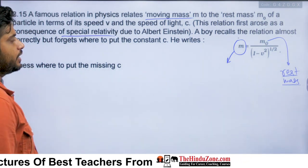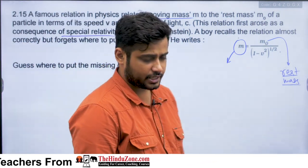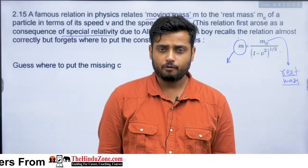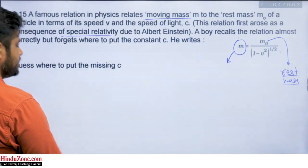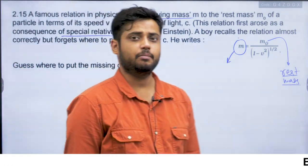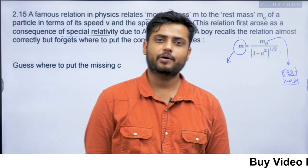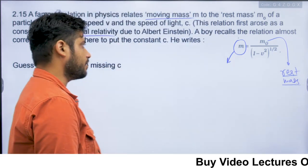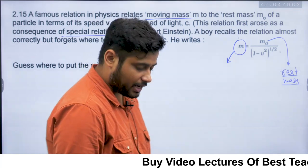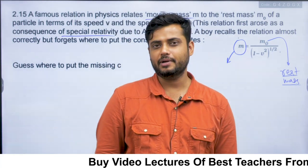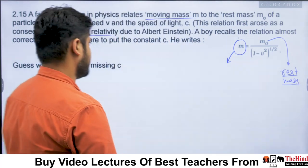Albert Einstein published some papers in 1905, one of which was on special relativity. Another was on Brownian motion and one on the photoelectric effect, for which he received the Nobel Prize. The theory of relativity was not understood at that time and was initially ignored.